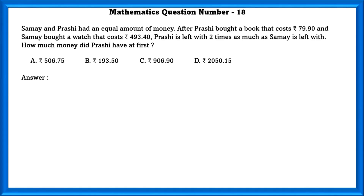Mathematics question number 18. Swamya and Prashy had an equal amount of money. After Prashy bought a book that cost Rs. 79.9 and Swamya bought a watch that cost Rs. 493.4, Prashy is left with 2 times as much as Swamya is left with. How much money did Prashy have at first?